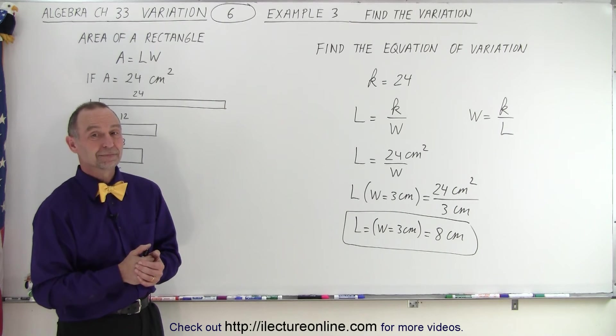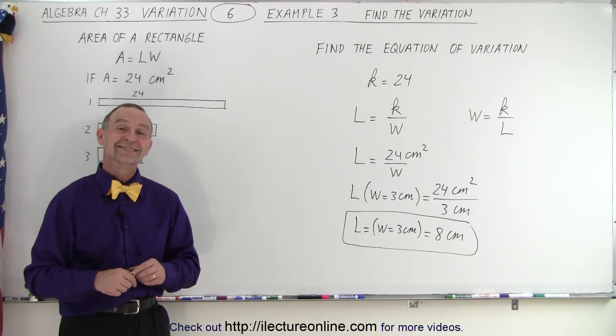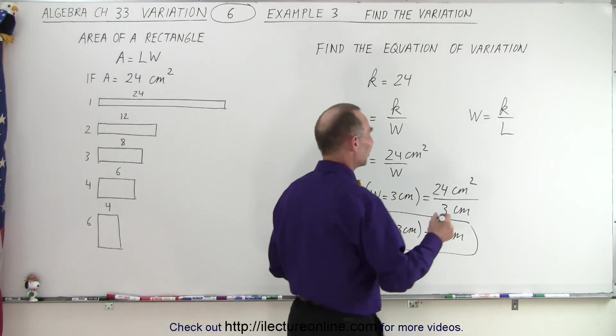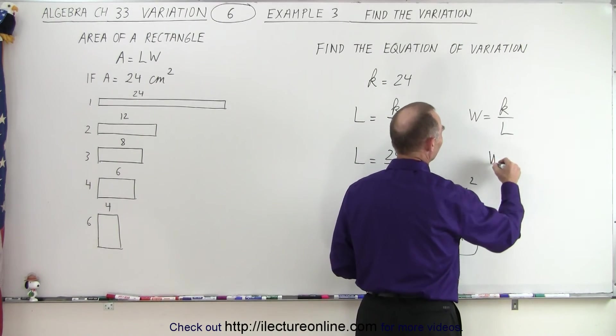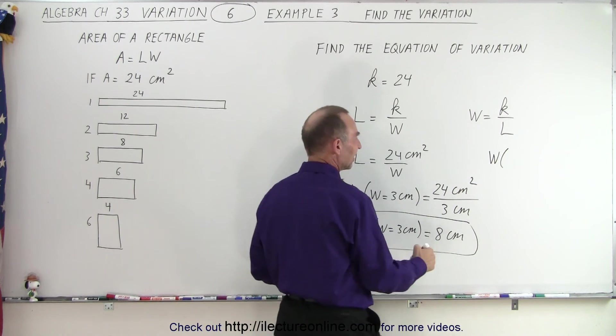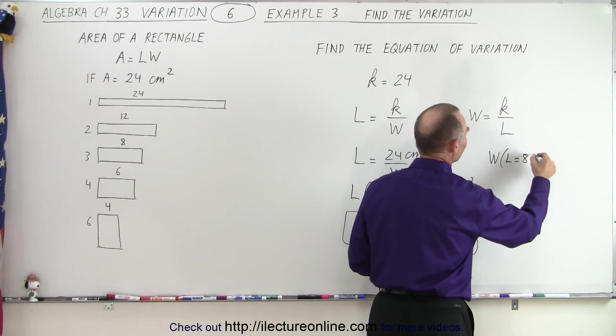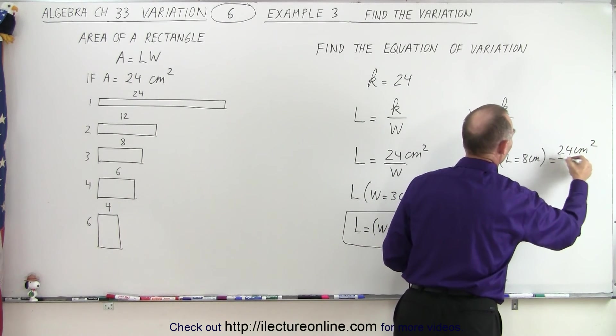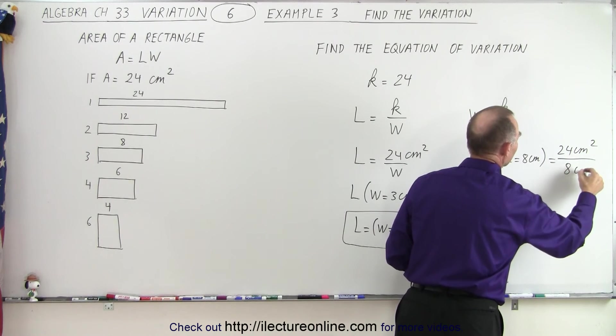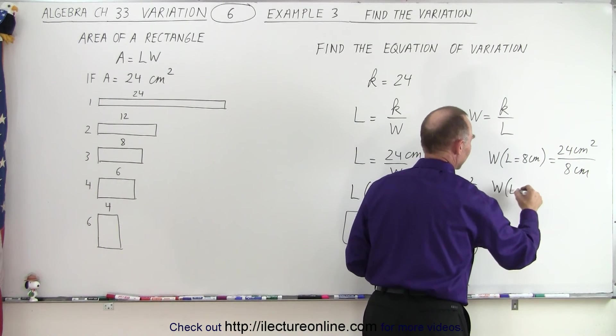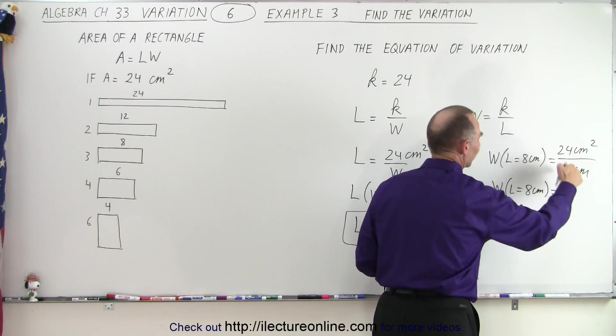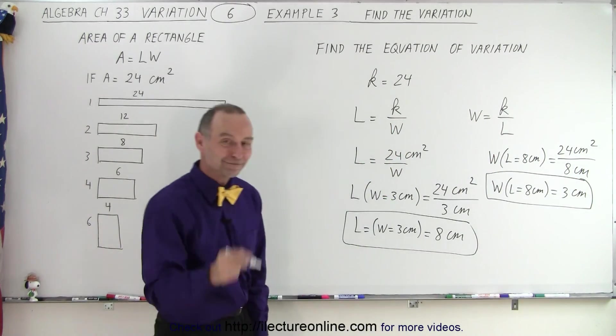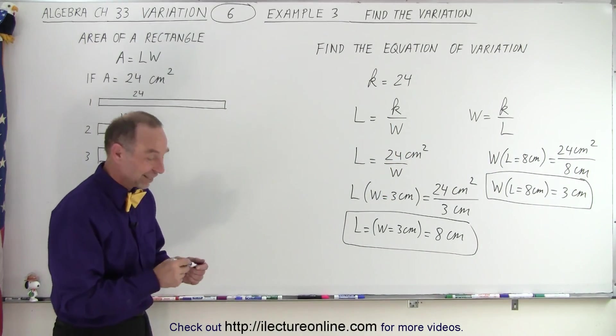If you do the W part, you want me to do the W part? You can put 8 centimeters for L and prove that you're right. Okay, let's try that. Let's try to plug in the value. So what we're going to do here is write W when L equals 8 centimeters. So W when L equals 8 centimeters is equal to k, which is 24 centimeters squared, divided by L being 8 centimeters. And sure enough, as you indicated, it works both ways. That is how it's done.